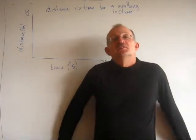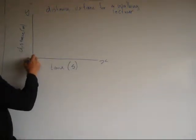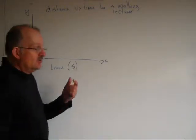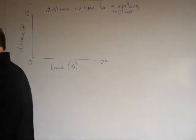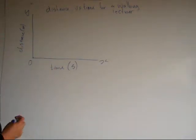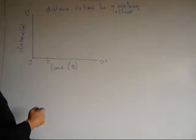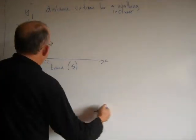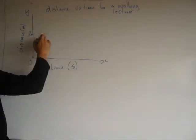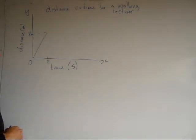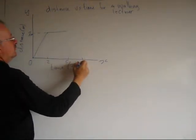Now let's actually put something on there. Let's take an example: I'm standing here, so at time zero seconds the distance is zero. I walk across to the side of the board — I don't walk very fast — I walk about two meters. I stop for a couple of seconds, about three seconds, and then I walk back.